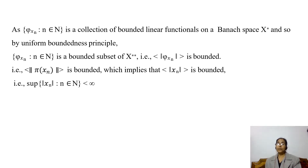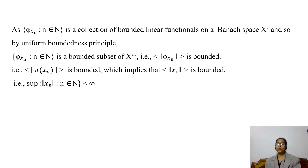This implies that the sequence ‖xₙ‖ is bounded. As this is a sequence of real numbers, its supremum exists and is finite. That means the supremum of the set {‖xₙ‖ : n ∈ ℕ} is less than infinity.